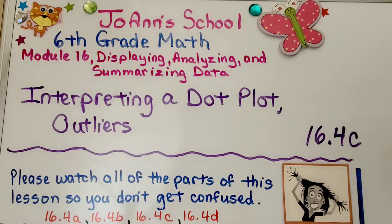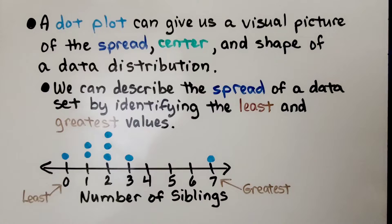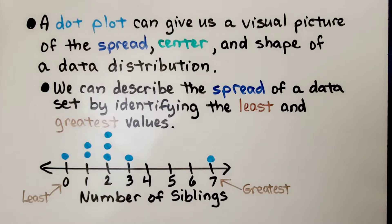Lesson 16.4c: Interpreting a Dot Plot Outliers. A dot plot can give us a visual picture of the spread, center, and shape of a data distribution. We can describe the spread of a data set by identifying the least and greatest values. We can see zero is the least and seven is the greatest. This is number of siblings for some people, and can you imagine having seven siblings?